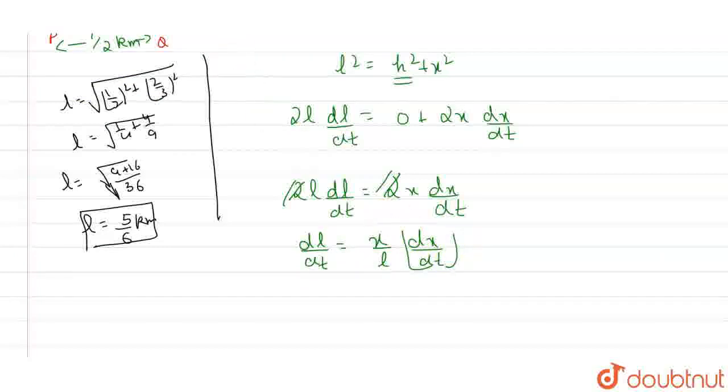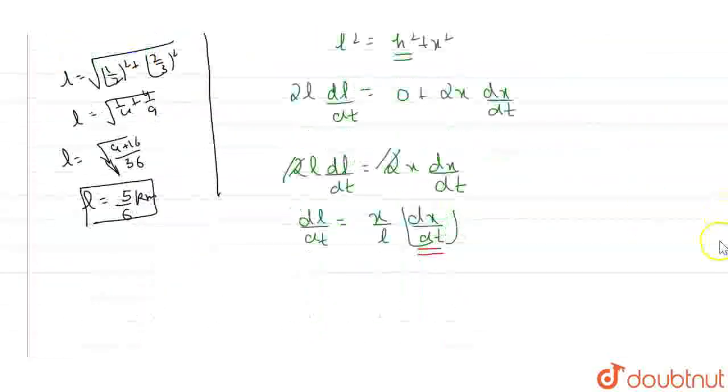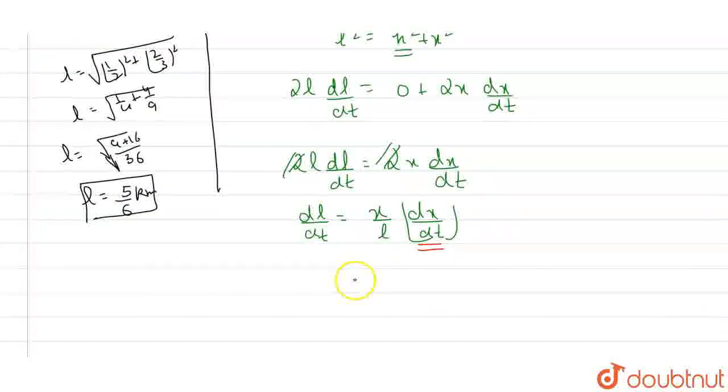Do we know the value of dx by dt? What is dx by dt? When position is changed with respect to time, it becomes velocity, and velocity is given as 15 km per hour. So we can replace this with 15. What is the value of x? The value of x is 1 by 2.